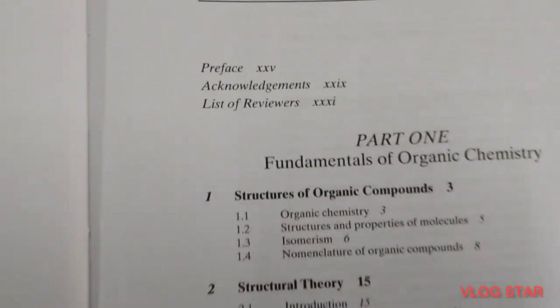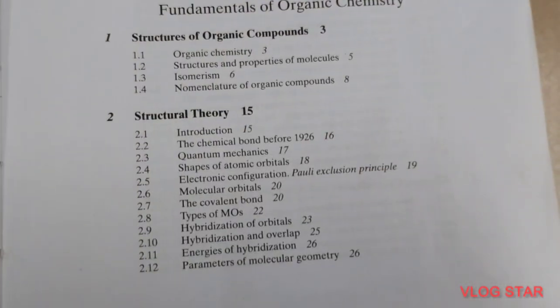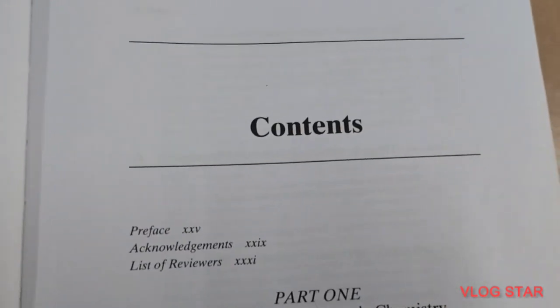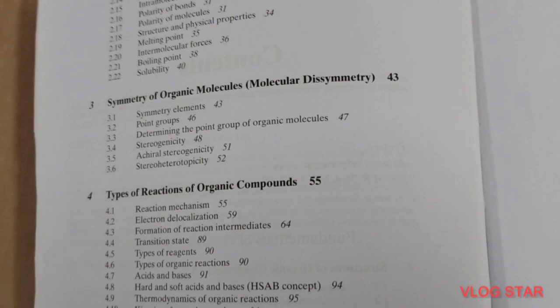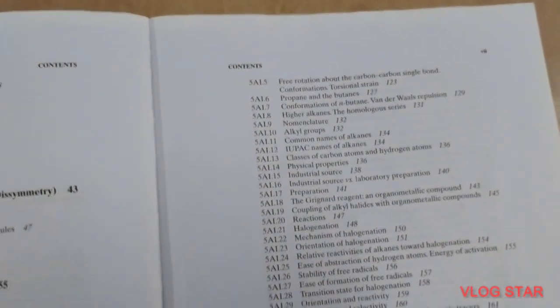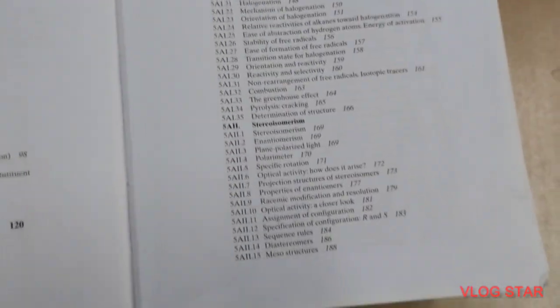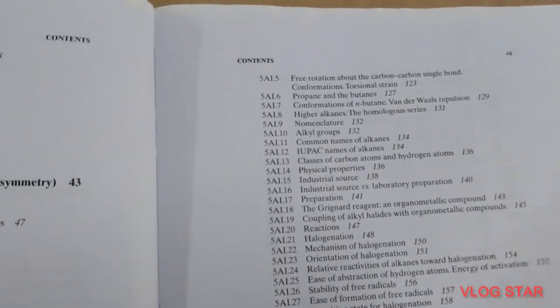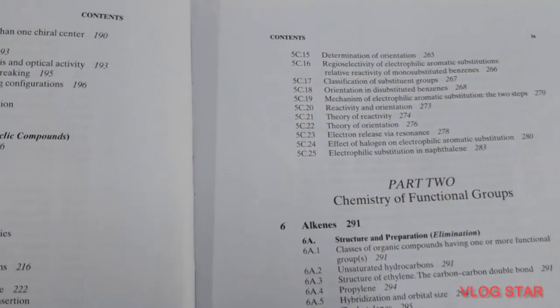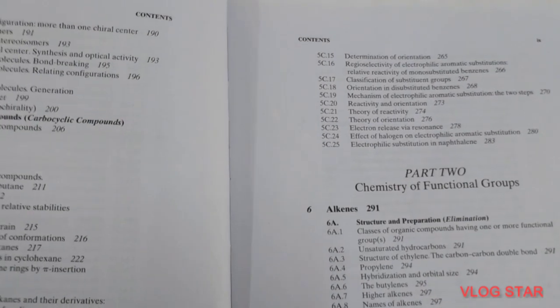Let's see the content. So part 1 content is the structure theories. You can check out in detail form. Bits and sub-bits are given in the book. All Alkane, Alkines, everything has been explained in detail.